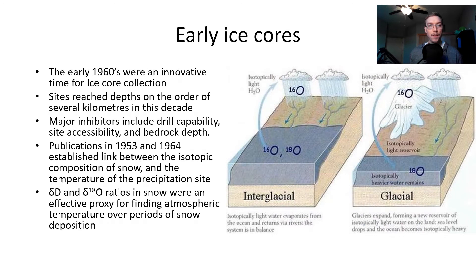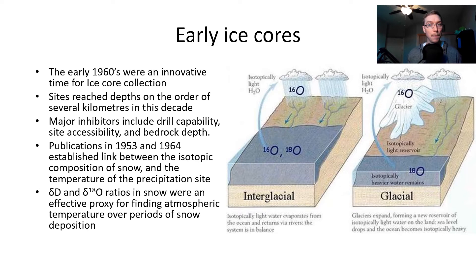The early 1960s were an innovative time for ice core collection — sites were reaching depths on the order of several kilometers. Major inhibitors included drill capabilities, site accessibility, and bedrock depth. Publications in 1953 and 1964 established the link between isotopic composition of snow and the temperature of precipitation at the site. This was a really important link because it allowed us to take those bubbles, look at the isotopic ratios within them, and understand the depositional climates during which they formed — things like isotopic deuterium and oxygen-18 ratios in snow as effective proxies for atmospheric temperatures.